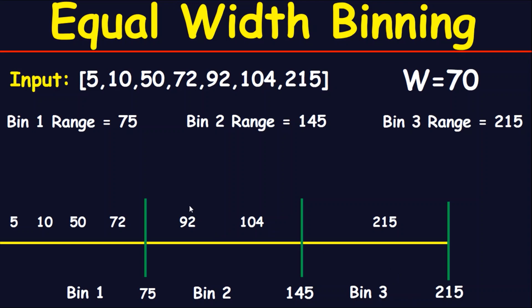So we write 5, 10, 50, and 72 into bin number 1. For bin number 2, which accepts numbers up to 145, we write 22 and 104. For bin number 3, which accepts numbers up to 215 inclusive, we write 250. These are the final assignments for all three bins. Thank you for watching.